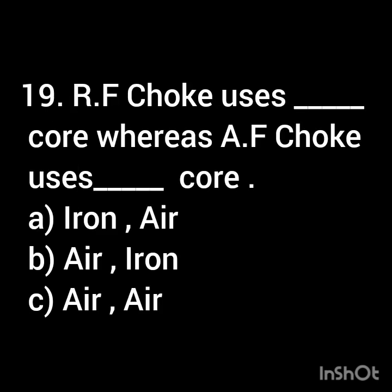The RF choke uses dash type of core whereas AF choke uses dash core. Option A: iron. Option B: air. Option C: air.